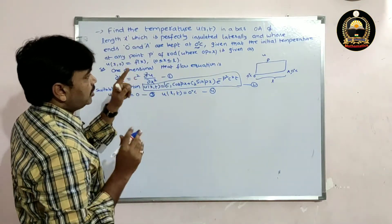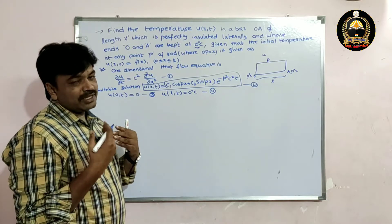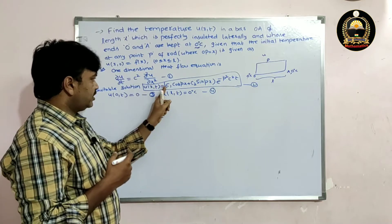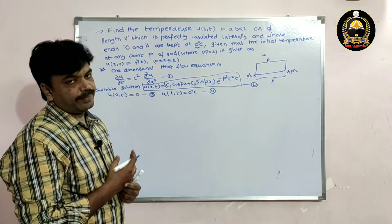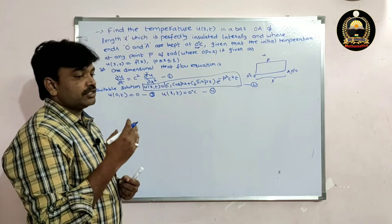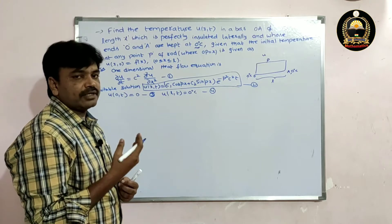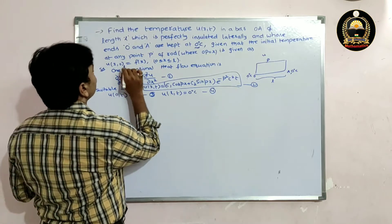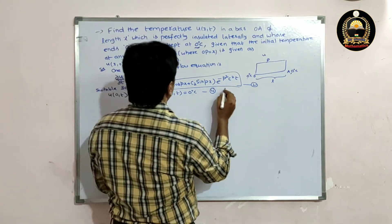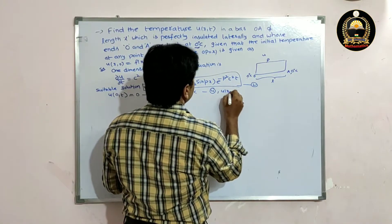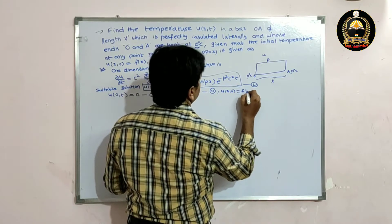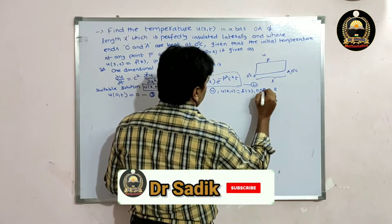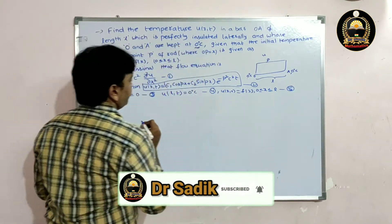If we know these three conditions we can solve the equation and find C₁ and C₂ easily. The initial temperature condition is u(x, 0) = f(x) for 0 < x ≤ L. This is condition five.